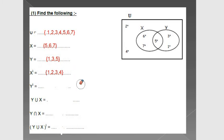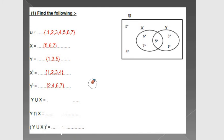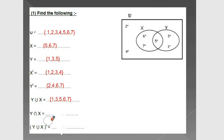Y complement: I will hide the elements of set Y, so I will write 2, 4, 6, and 7. Then find Y union X — union means all elements of Y and X, so I will write 1, 3, 5, 6, and 7. X intersection Y, or Y intersection X, means the common elements between X and Y — I have just 5.